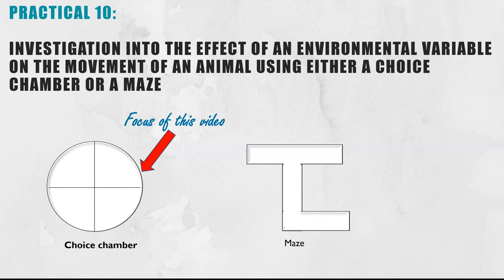This required practical is looking at the effect of an environmental variable on the movement of animals and we're going to be focusing just on the choice chamber today. You can use a maze as well in this required practical but that will come in a later video.